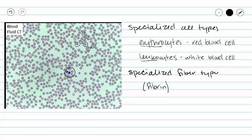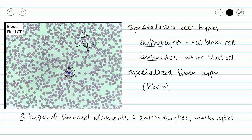I mentioned that we have three different types of formed elements. Two of those formed elements are erythrocytes and leukocytes. Our third formed element is called a platelet. Platelets are these tiny little purple dots that you see scattered throughout the slide. They are not cells — they are called cell fragments — and so they do not count as a specialized cell type. But I may ask you to identify them as a structure found in blood.